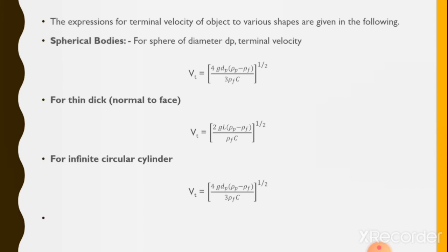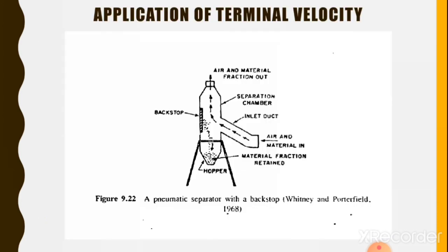The expressions for terminal velocity of objects of various shapes are given in the following equations. For a spherical body of diameter Dp, terminal velocity is given by: Vt = [4g · Dp(ρp − ρf) / (3 · ρf · C)]^(1/2). Similarly, formulas are also provided for a thin disc normal to face and for an infinite circular cylinder.